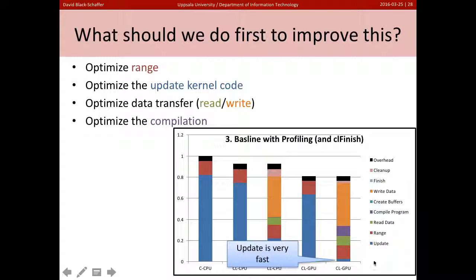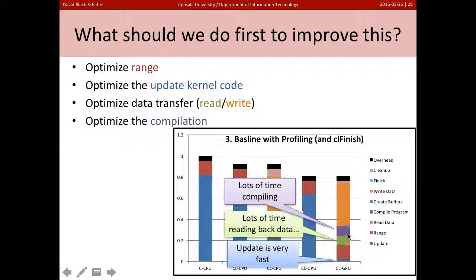Well, update is now really fast. This is what we expect. Update's about 35 times faster, so we probably don't want to spend any more time trying to optimize that right now. We're spending a lot of time reading back data and compiling. This is actually a huge amount of time. But we're spending a huge amount of time writing data. So the first thing we should tackle here is how can we reduce the amount of data we're going to write to the device.